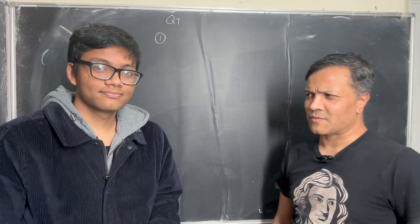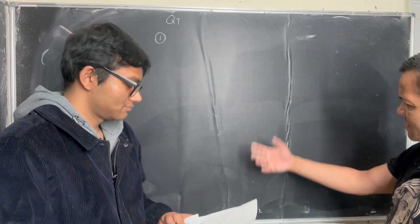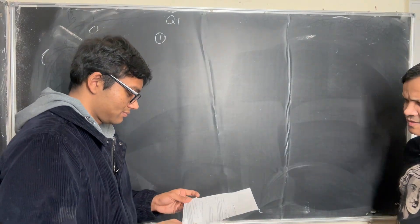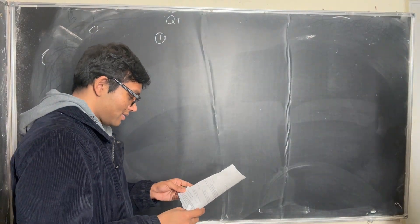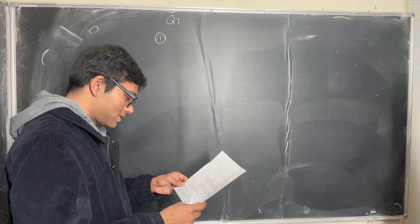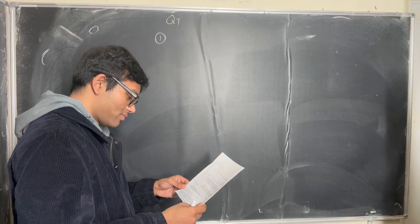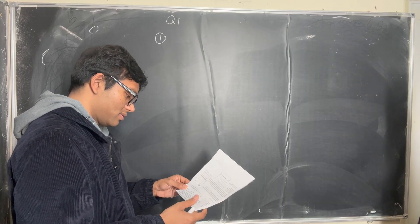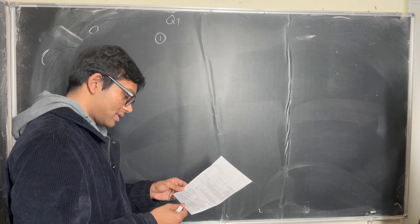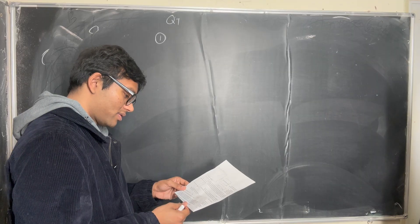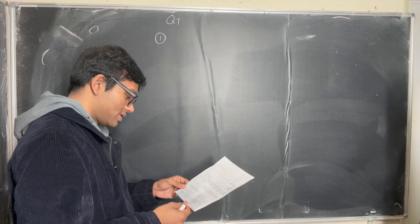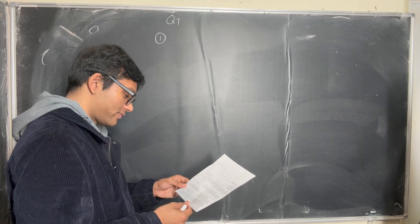I'm a graduate physics student at Brown University. Okay, two boxes A and B with masses M1 and M2 are connected by a cord and rest on a frictionless horizontal surface.